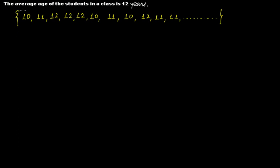Read this first statement — it says the average age of the students in a class is 12 years. Suppose we have a class of strength 30 students. This data tells us the values of ages of all the students in this class. The first student's age is 10 years, the second is 11 years, the third is 12 years, and so on. Some are 10 years, some are 11 years, some are 12 years. But still we say the average age is 12 years.